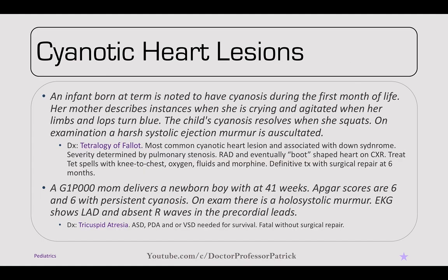Moving into cyanotic heart lesions, an infant born at term is cyanotic during the first month of life. The mother describes instances where the child cries, becomes agitated, then turns blue, with cyanosis resolving when she squats. Examination shows a harsh systolic murmur — tetralogy of Fallot. It's the most common cyanotic heart lesion, associated with Down syndrome. Severity is determined by the degree of pulmonary stenosis, with right atrial deviation and a boot-shaped heart on x-ray. Treat 'tet spells' with knee-to-chest positioning, oxygen, fluids, and morphine. Definitive treatment is surgical repair at about six months.